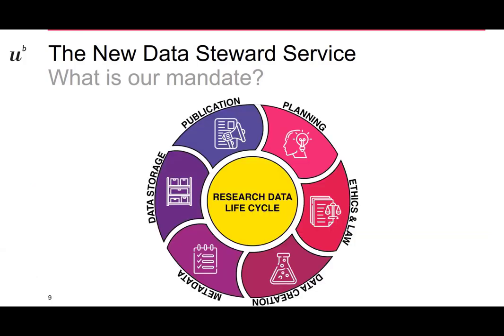What you see here is what we call the research data lifecycle. Starting at the top right: you have an idea and plan out your research; then you think about what ethical and legal questions you have to take care of; you then create data — which can be anything from a computer simulation to a photograph; you write metadata about the data you created; and finally you store and publish that data. That is what we summarize as research data management, and we help you along each of those steps.